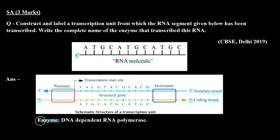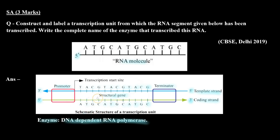The enzyme that performs transcription is called DNA-dependent RNA polymerase. It is called RNA polymerase because it synthesizes RNA molecules, and DNA-dependent because it depends on the DNA strand as a template.